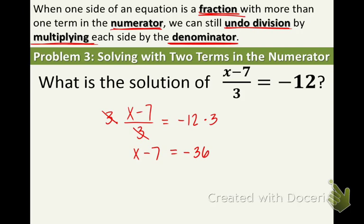Let's get rid of that negative 7 by adding. Add 7 to both sides. Those go away. x equals negative 29.